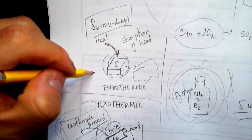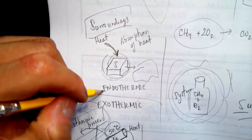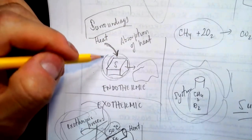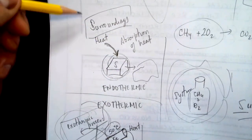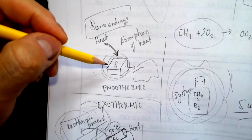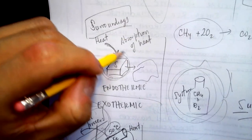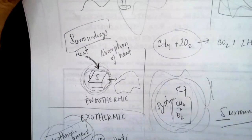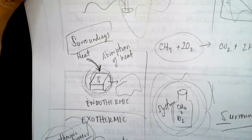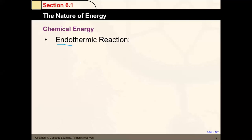In the other case, if my system is gaining heat, it's endothermic. The surroundings give off heat — they are being exothermic — but since my system is gaining heat, the process is endothermic.